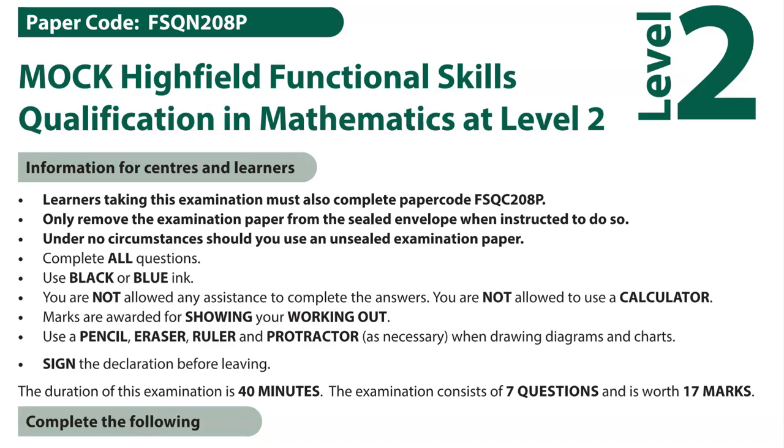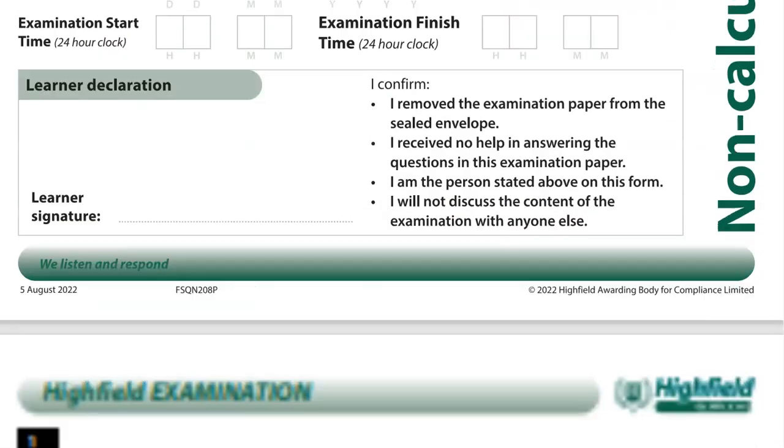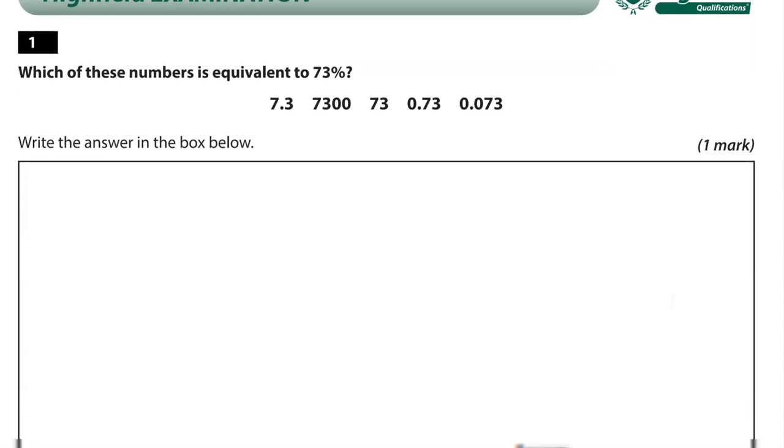This is a Level 2 Functional Skills Maths paper from Highfield. It's split into two parts. In the first part, you can't use a calculator, but you can in the second part. This is the first part.